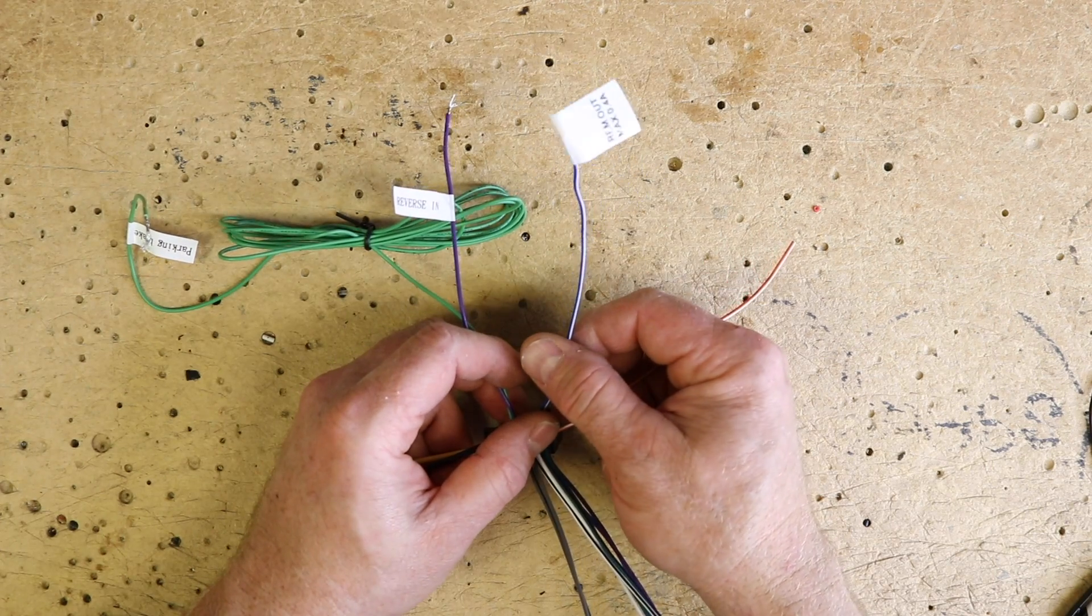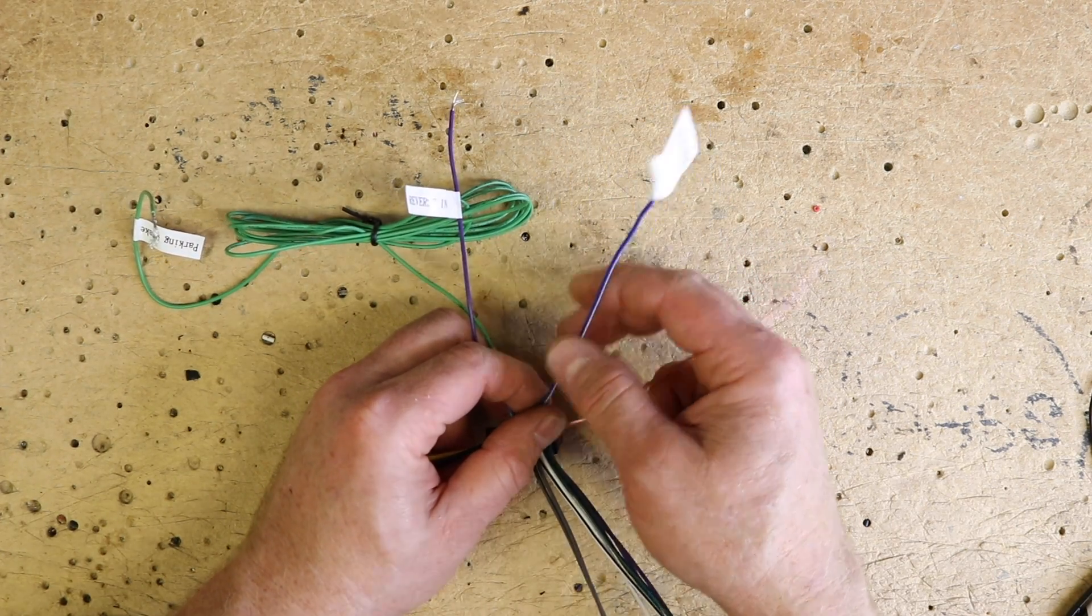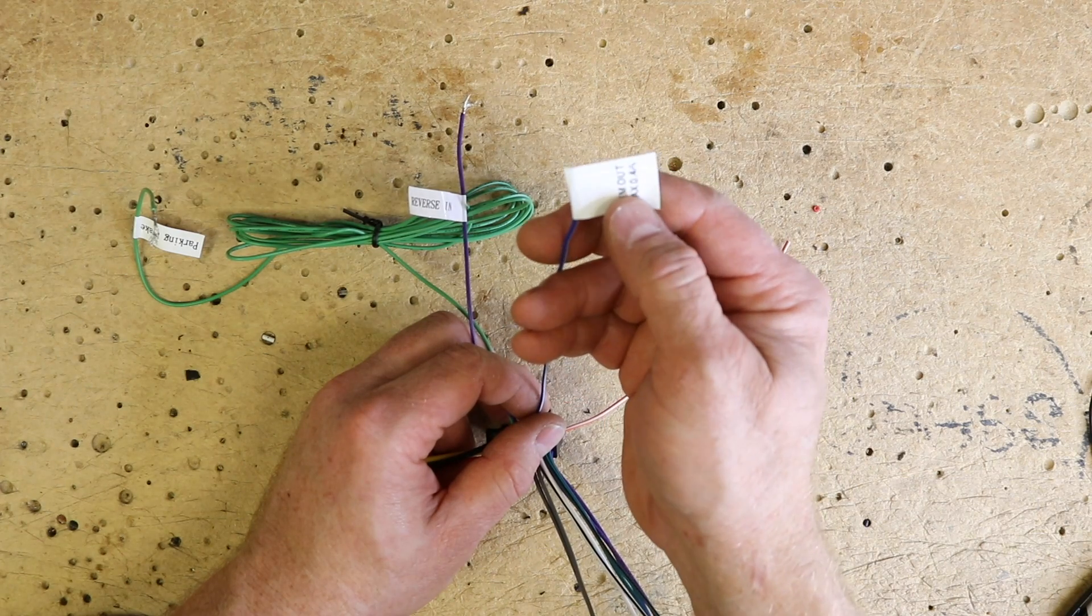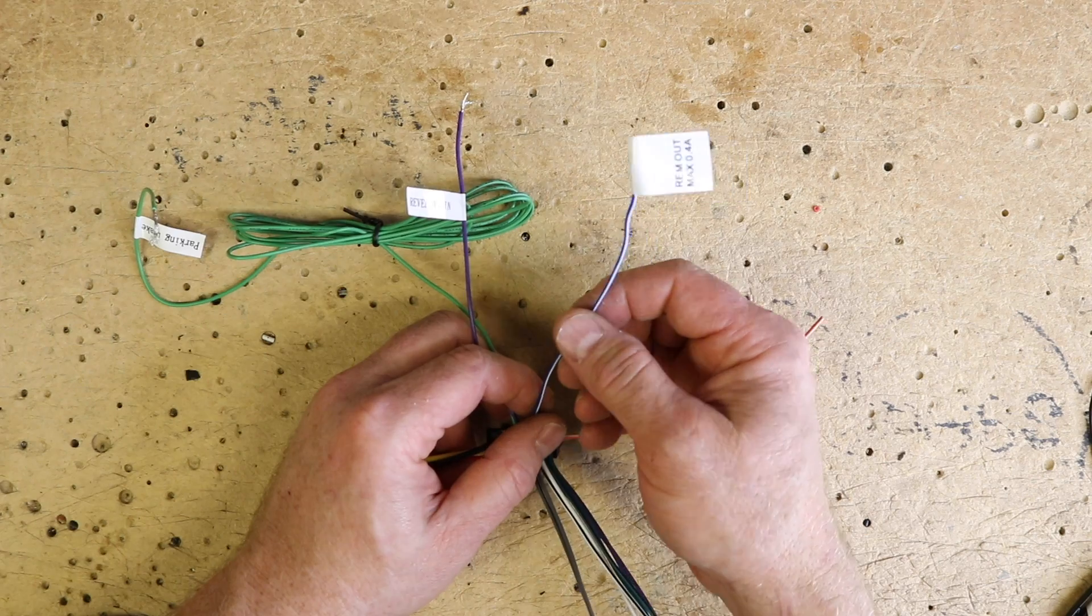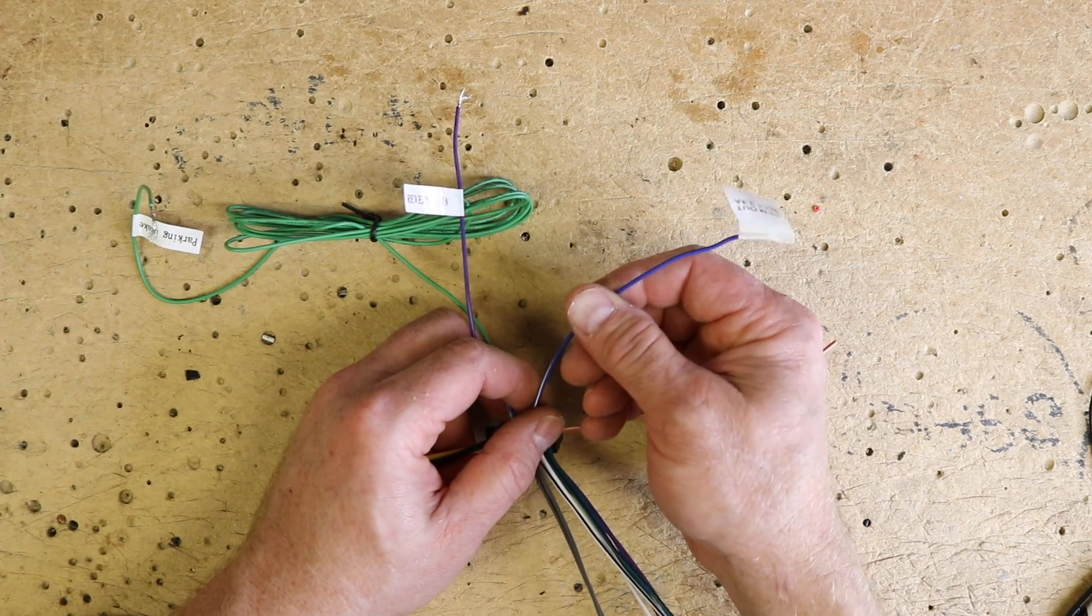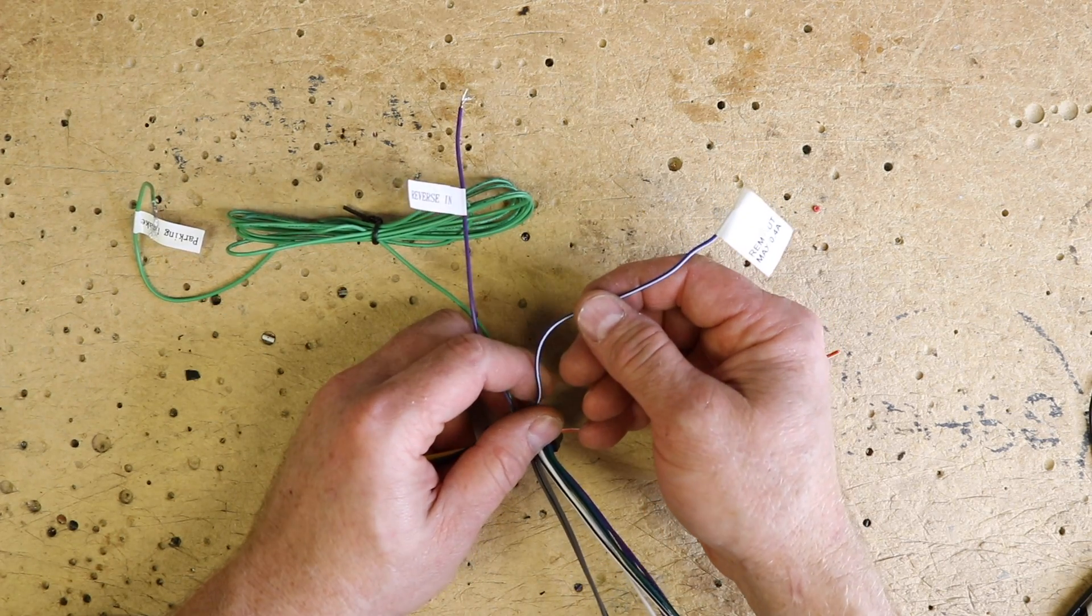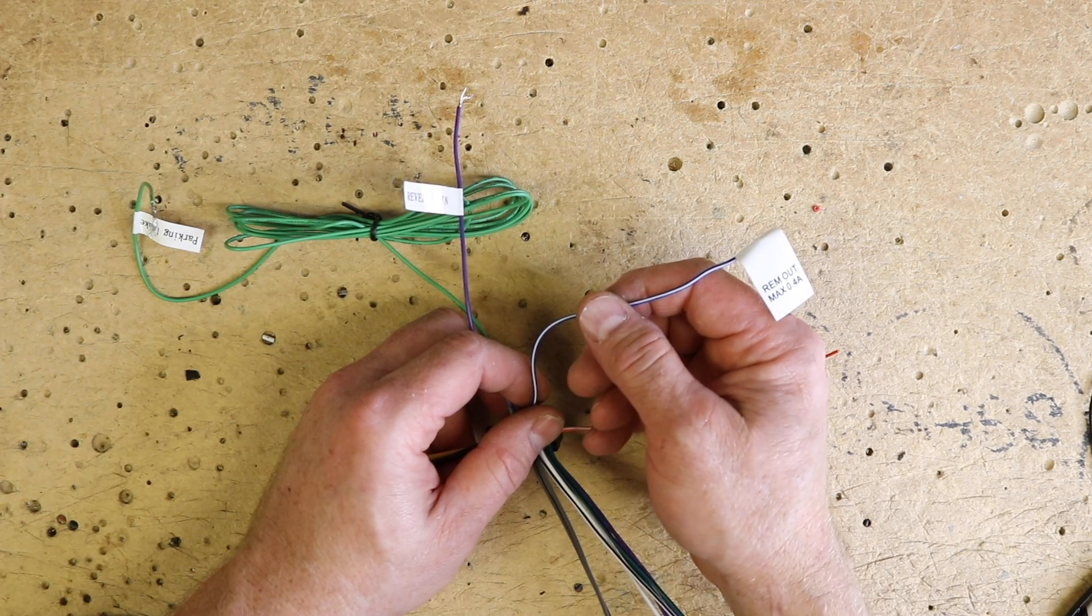Next is the blue white wire. This is a multi-function wire. It's got a sticker on the end that says max .4 amps of output. The reason why it has that is because this does a lot of things. For one, it will turn on an amplifier or power antenna, which a lot of cars have.